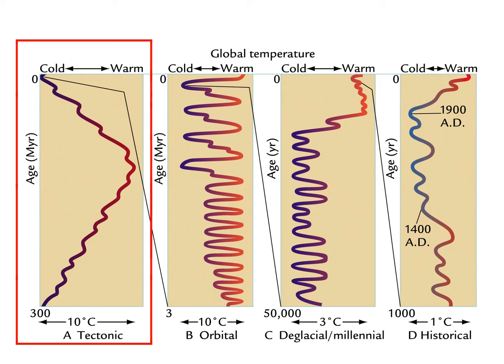That's just an introduction into some of the proxies we use and how we find out about past climates. What we're going to do now is look at some examples of that. The first one we're going to look at is really long-term climate change, over millions or tens of millions of years.